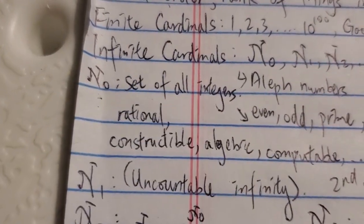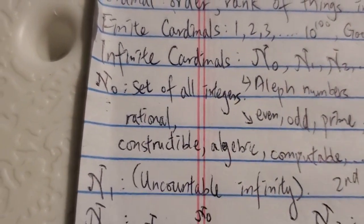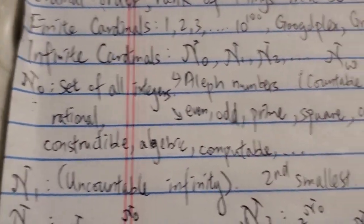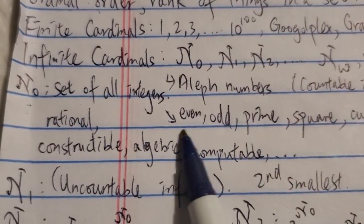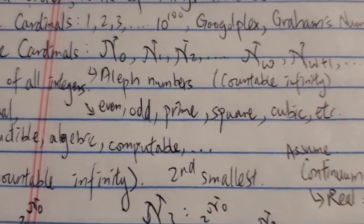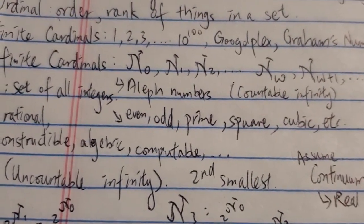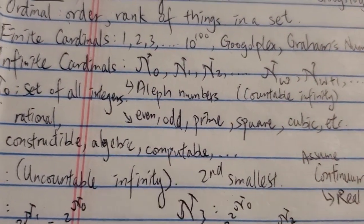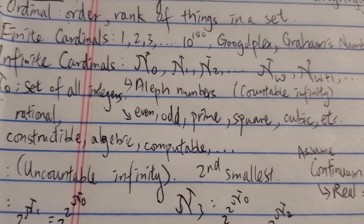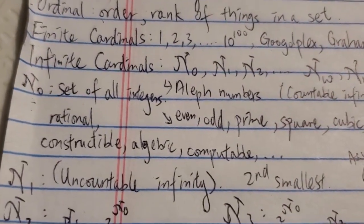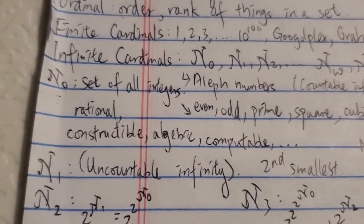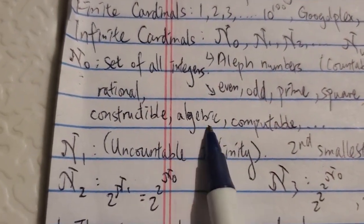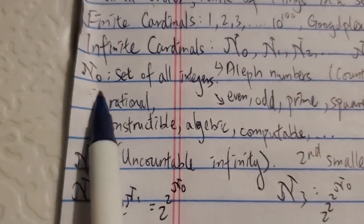Aleph-null is the smallest infinite cardinal number. It represents the set of all positive integers or negative integers, and also subsets which include the set of all even numbers, the set of all odd numbers, prime numbers, square numbers, etc. They are all the same size — most people might think there are more positive integers than even numbers, however there is a bijection, which is a one-to-one correspondence. So you can map them one to one, and it can be proven that they are the same size. Other examples are rational, constructible, algebraic, and computable numbers — they all belong to aleph-null.